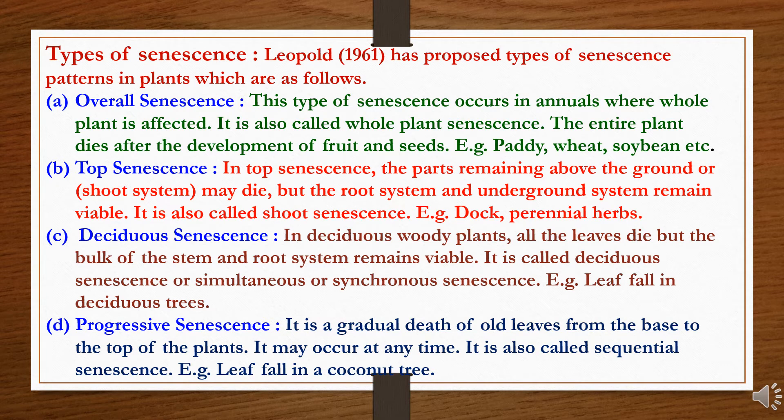The third type is deciduous senescence. In deciduous woody plants, all the leaves die, but the bulk of the stem and root system remains viable. It is called deciduous senescence, or simultaneous or synchronous senescence. Example: leaf fall in deciduous trees. The fourth type is progressive senescence — a gradual death of old leaves from the base to the top of the plant. It may occur at any time, and is also called sequential senescence, like leaf fall in a coconut tree.